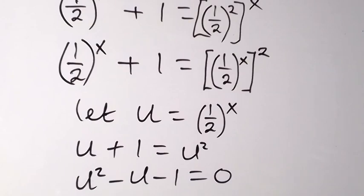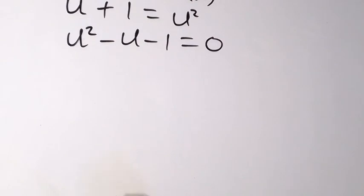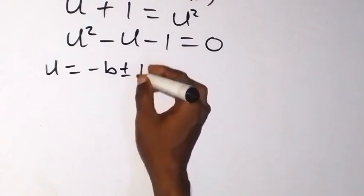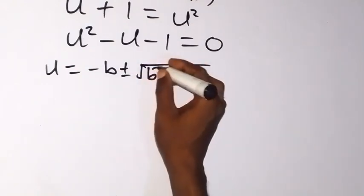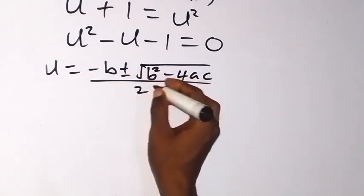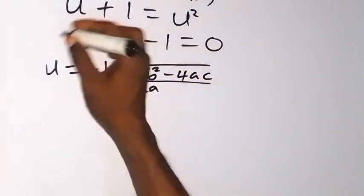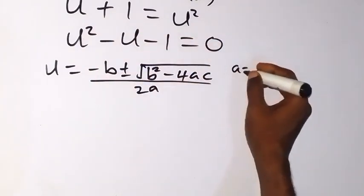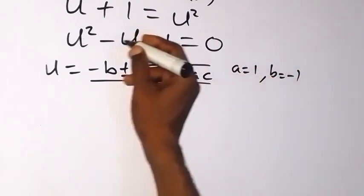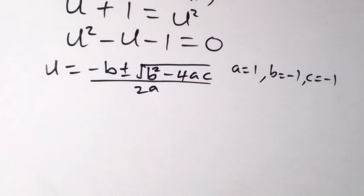We can use the quadratic formula to solve this. Applying the quadratic formula, u equals negative b plus or minus the square root of b squared minus 4ac, all over 2a. For this particular equation, we have a equals 1, b equals negative 1 (the coefficient of u), and c equals negative 1 (the constant).